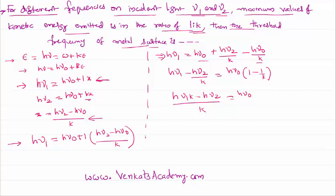This implies threshold frequency nu0 is (k*nu1 minus nu2) divided by (k minus 1).